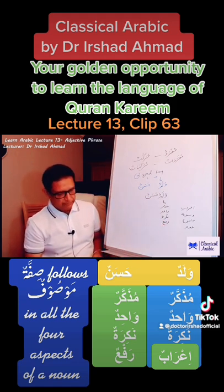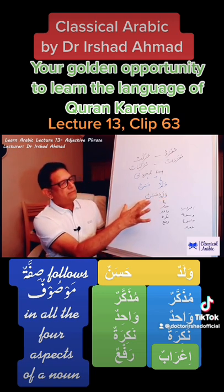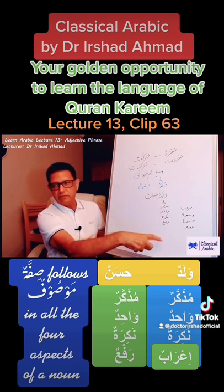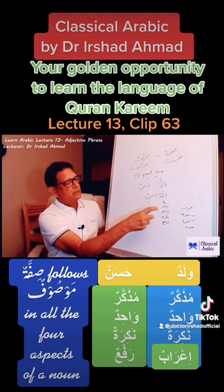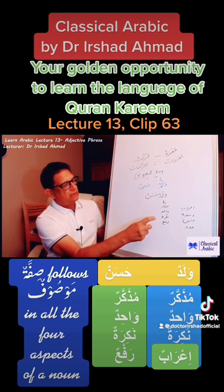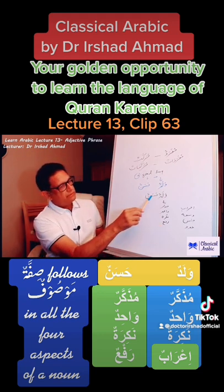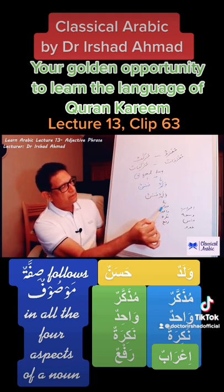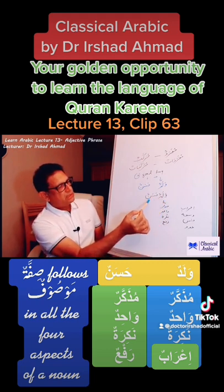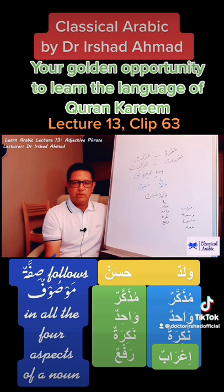What happens in Murakab Tawsefi is that Sifa follows Masoof, and Sifa will have to follow Masoof in all four aspects. If Masoof is Muzakkar, Sifa will have to be Muzakkar; if Masoof is Wahid, Sifa will have to be Wahid; if Masoof is Nakira, Sifa will have to be Nakira; if Masoof is in Rafa, Sifa will have to be in Rafa. Here Hasanun follows Waladun and agrees with it in all four aspects.